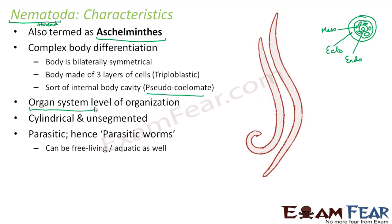They are parasitic in nature and are also termed parasitic worms, because they live on another host body and derive nutrition from it. The pseudocoelom is a distinguishing feature of nematodes as it is seen here for the first time. This pseudocoelom is not lined with a layer of tissue, whereas a true coelom has a complete lining known as peritoneum.